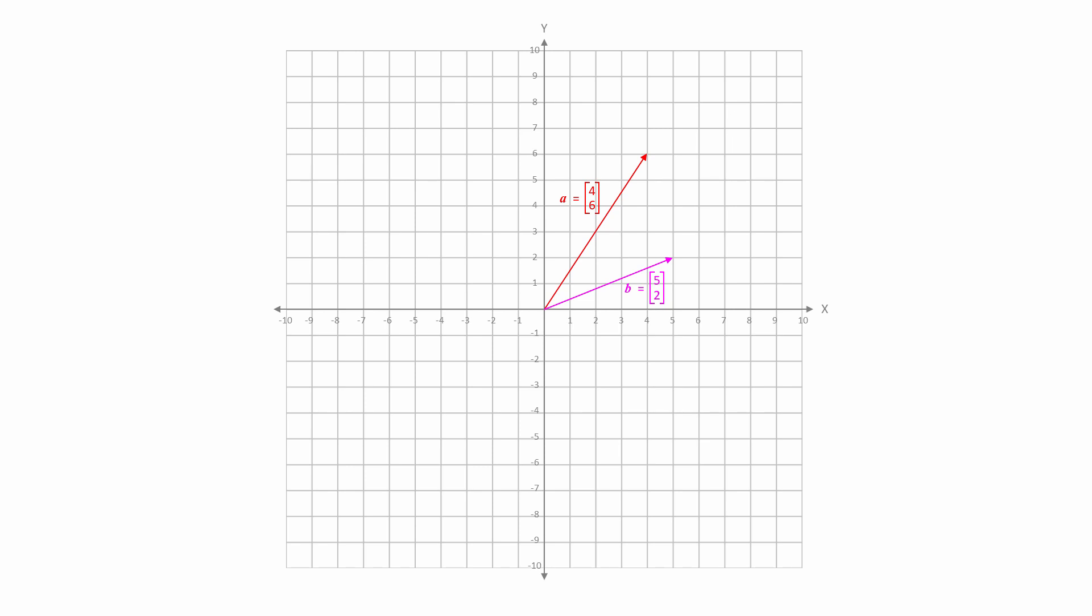Now, suppose there's another force being applied at the same time by one of the other maneuvering thrusters, but in a different direction. It's the same type of vector, but notice that this is a smaller force because the magnitude of the vector is smaller.